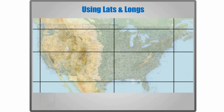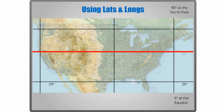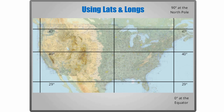Take a look at this grid over the continental United States — it roughly outlines the country. From the bottom up, we've identified three lines of latitude. The lower one appears at 29 degrees — more correctly referred to as 29 degrees north because it's in the Northern Hemisphere. The next latitude line is shown at 40 degrees, and the one at the top appears at 47 degrees.